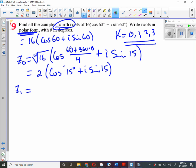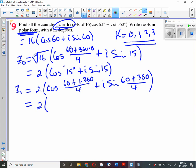Now we're looking for z₁, which again is going to be the fourth root of 16 is 2, cosine (60 + 1×360) divided by 4, plus i sine (60 + 360) divided by 4, equals 2 cosine (420/4) which is cosine 105° plus i sine 105°.